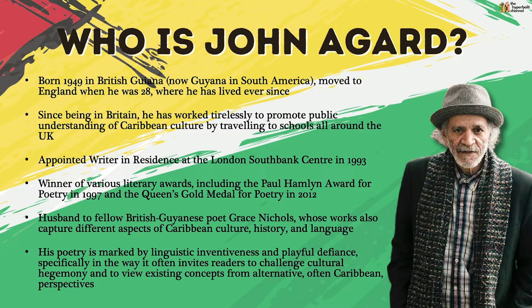As always, a bit of biographical context before we dive into the poem proper. John Agard was born in 1949 in British Guyana — now known as Guyana in northern South America. He moved to England when he was 28, in 1977, where he has lived ever since. Ever since he's been in Britain, he has worked tirelessly to promote public understanding of Caribbean culture, largely by traveling to schools around the UK and performing his poetry. He was appointed Brighton Residence at the London Southbank Centre in 1993 and is the winner of various literary awards, including the Paular Hamlyn Award for Poetry in 1997 and the Queen's Gold Medal for Poetry in 2012.